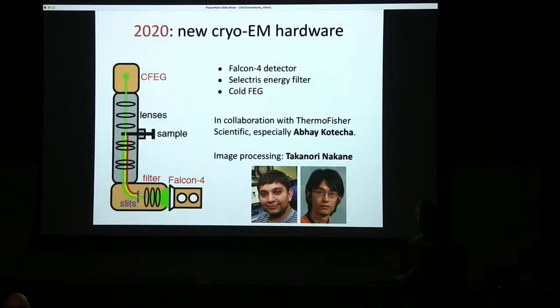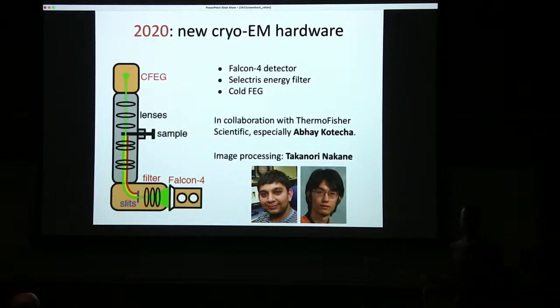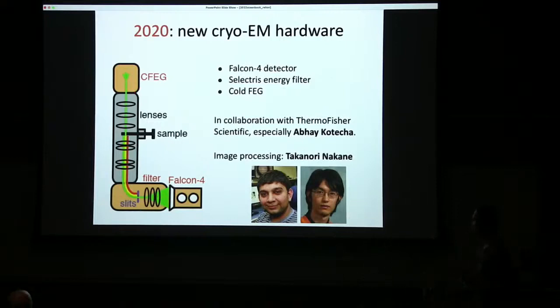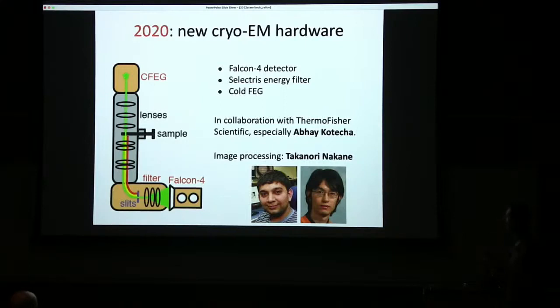In 2020 we collaborated with Abhay Kotecha at the Thermo Fisher factory in Eindhoven. They made some new hardware — and I think you already have some of it here. They did a cold field emission gun, which I'll come back to. A new, more stable energy filter. And the next generation of the direct electron detector, the Falcon 4, with even better DQEs and faster frame rates. We sent Abhay some samples — apoferitin and the GABA receptor — and Takanori Nakane, a postdoc in my lab, processed all the movies that came off this microscope.